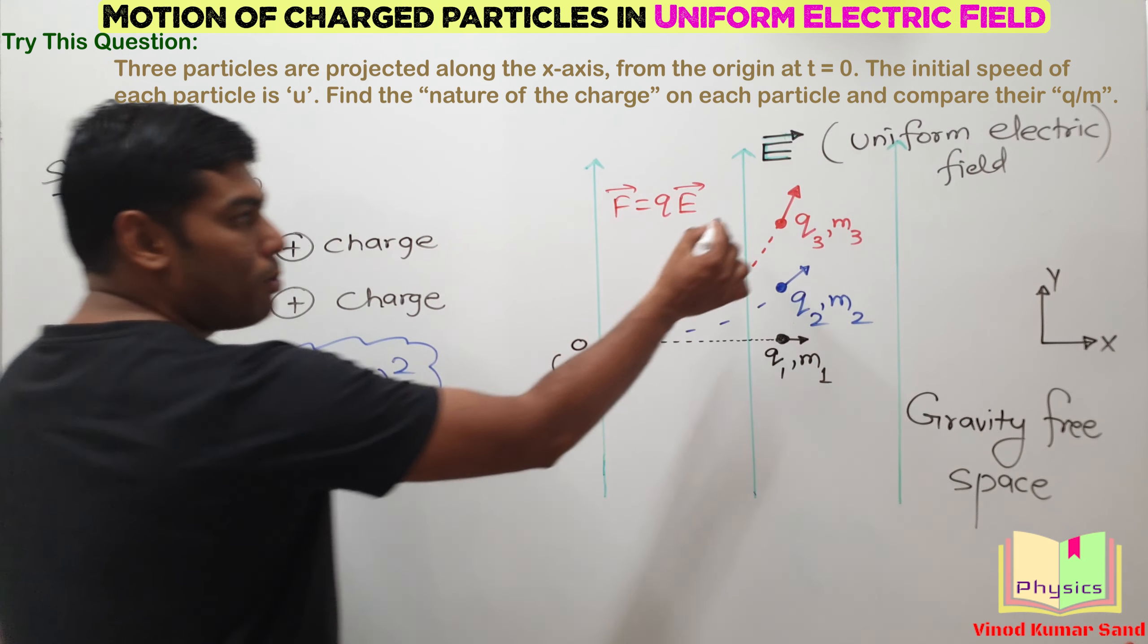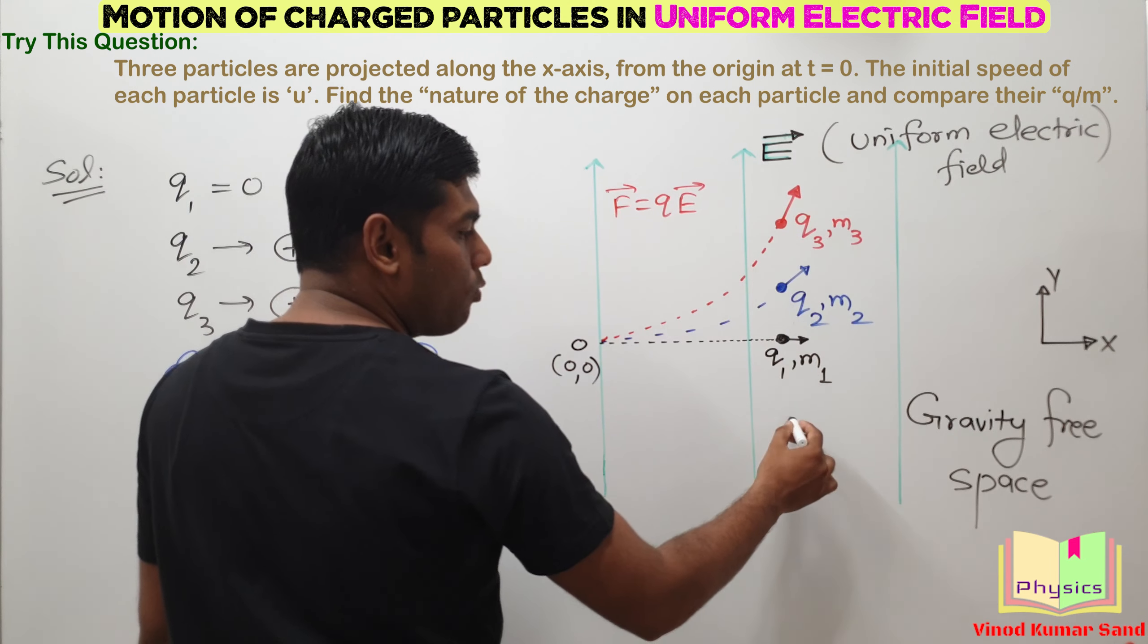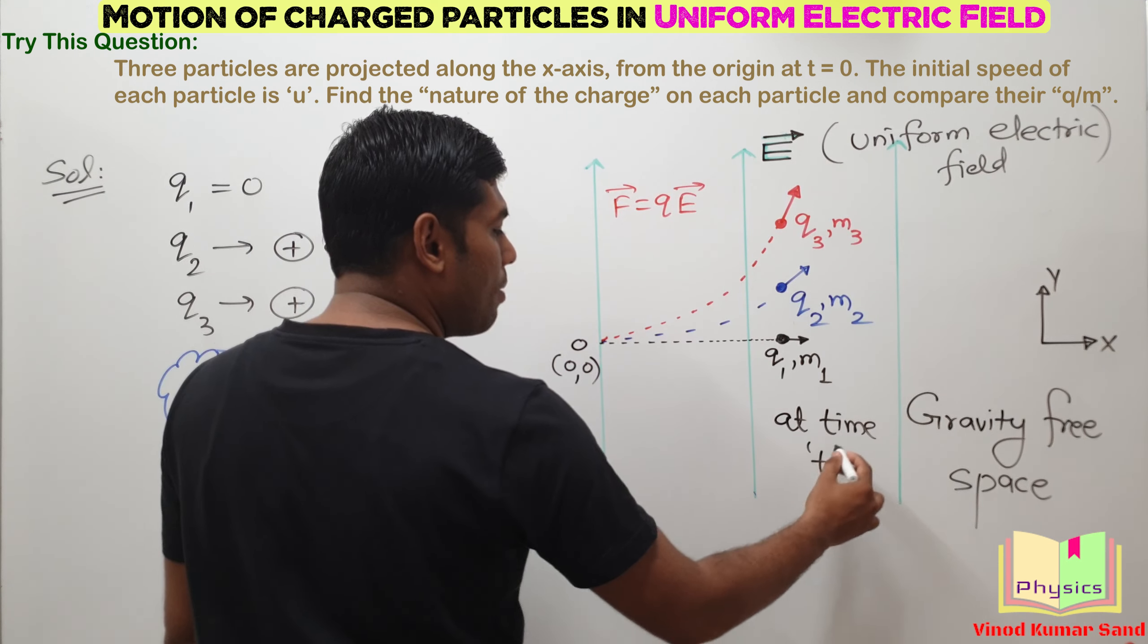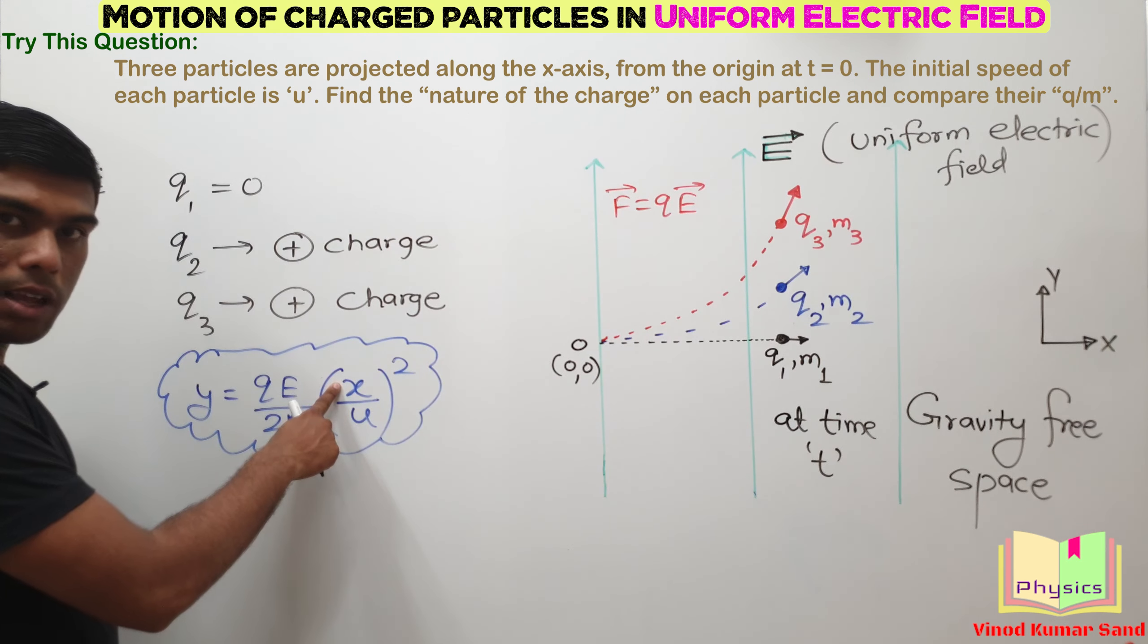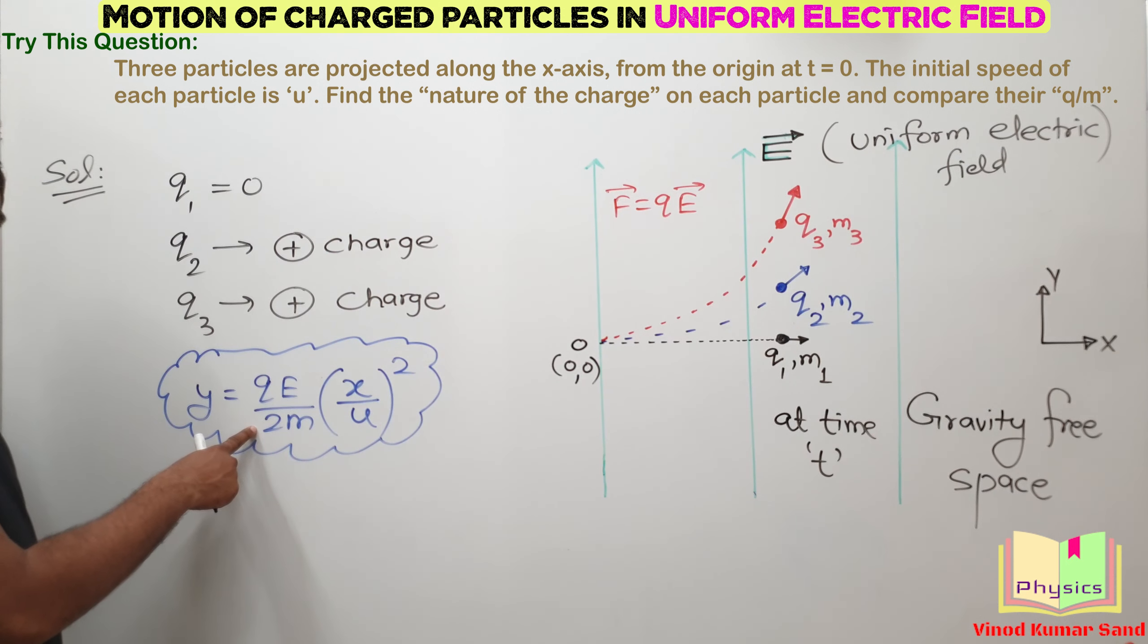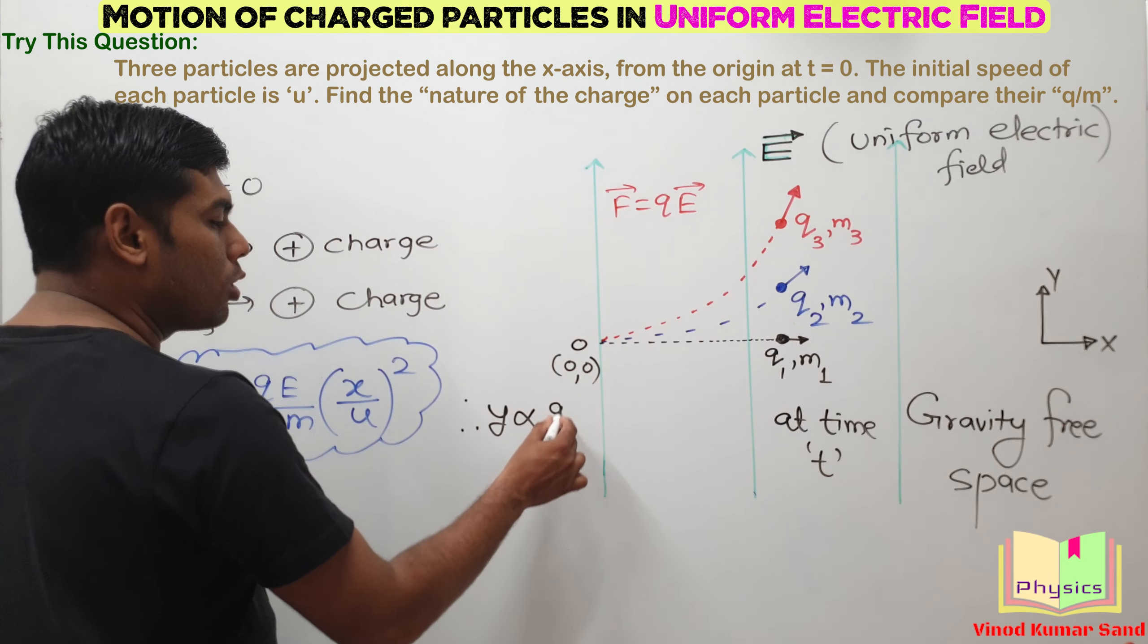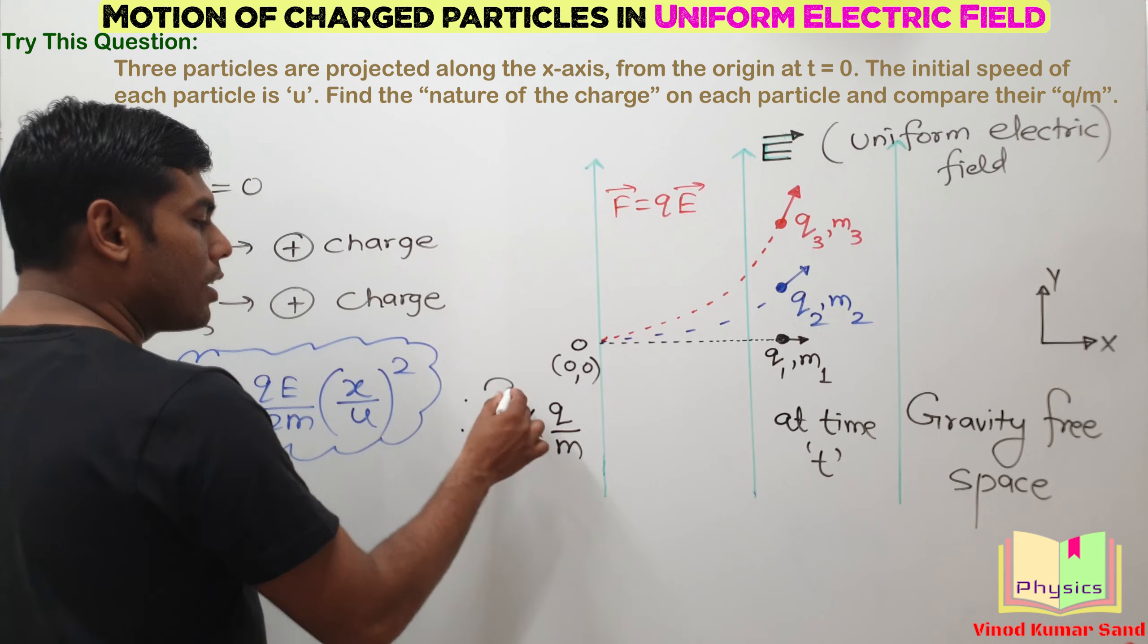At this moment, at time t, if we check, all these particles have the same x coordinate. So x is same. Their initial projection speed is same. 2 is equivalent data for everyone. So we can directly write that Y is proportional to Q by M.